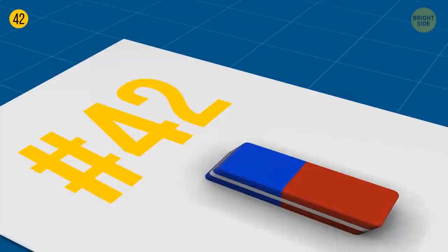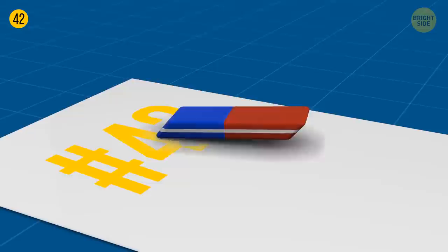It's a myth that the red side of the eraser is for pencil and the blue one is for ink. The blue one gets rid of mistakes on thicker types of paper only. It works both for pencil and even ink, but make sure the paper is really thick.